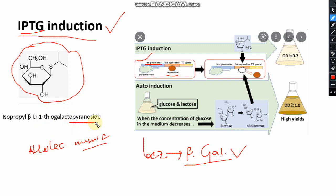In this schematic diagram, when we do not add IPTG, the OD value of the bacteria is very low, meaning bacterial expression is very low. But when you add IPTG, the OD is higher, so bacterial expression is very high and you get a higher yield of protein.